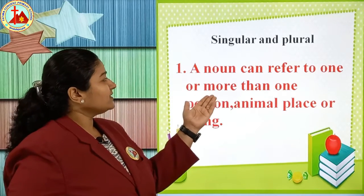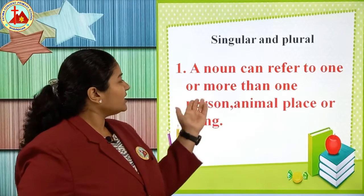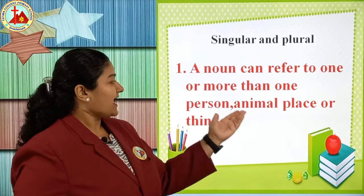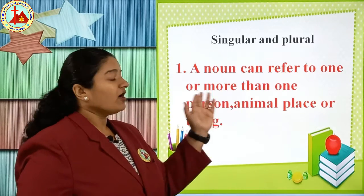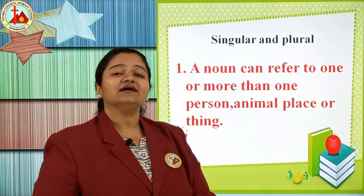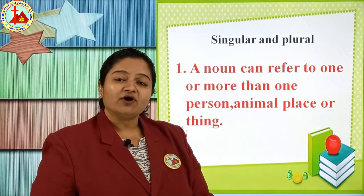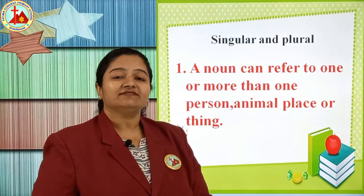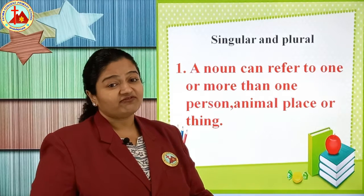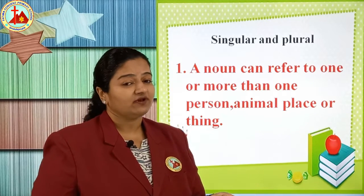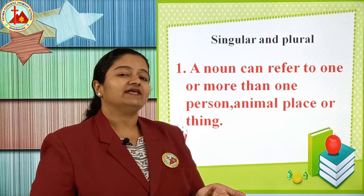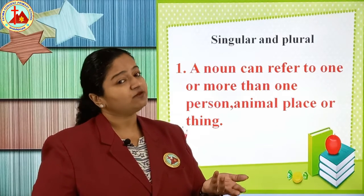A noun can refer to one or more than one person, animal, place or thing. A noun is a name of an animal, bird, thing, or any person's name. Now we will see what is singular and what is plural, or we can say one and more.